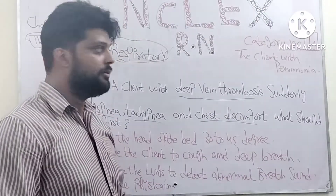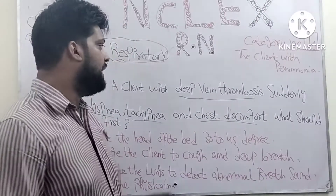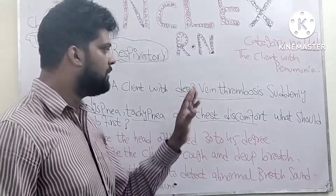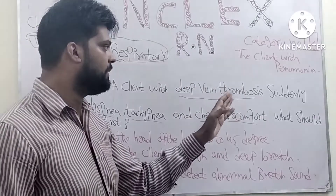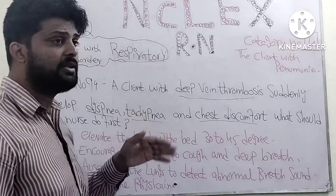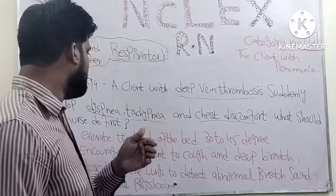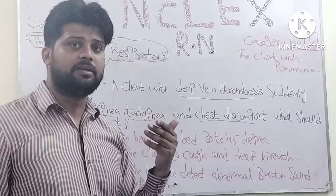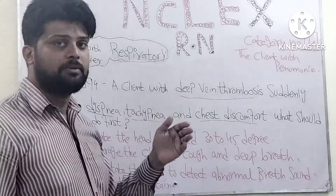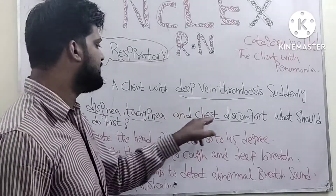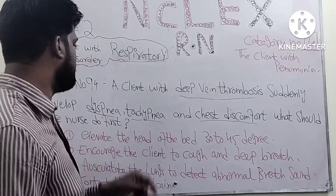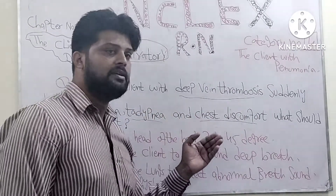I will repeat this also in Urdu. The patient has deep vein thrombosis and suddenly develops dyspnea, meaning difficulty in breathing, and tachypnea, meaning rapid breathing, and chest discomfort. What should the nurse do first? What is deep vein thrombosis for nursing care?